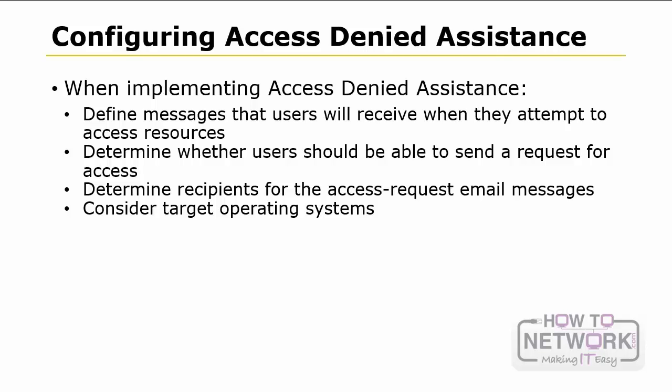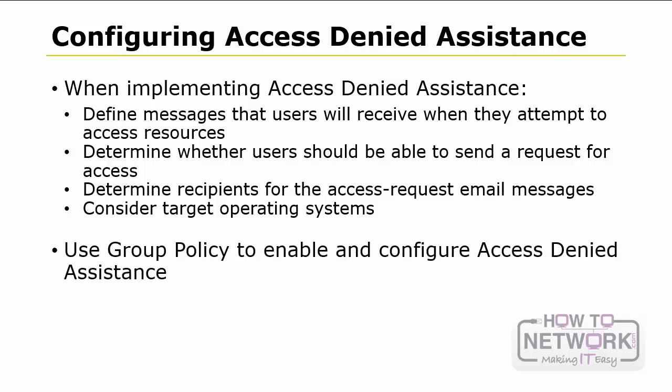The third method is remediation by the help desk and file server administrators. If users cannot self-remediate and data owners cannot resolve the issue, administrators can troubleshoot by accessing the UI to view the effective permissions for the user. For example, an administrator should be involved in cases where claims attributes or resource object attributes are defined incorrectly, contain incorrect information, or when the data itself appears to be corrupted. You use Group Policy to enable the Access Denied Assistance feature.